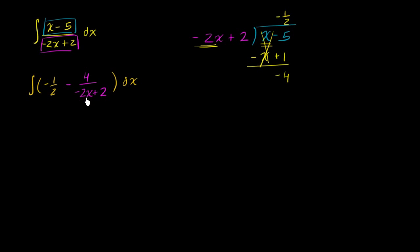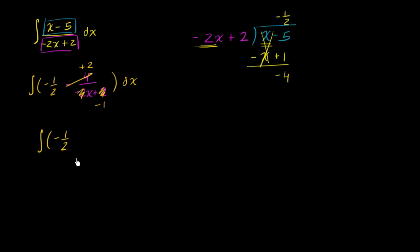Now let's see — it looks like we can simplify this expression a little bit more. The numerator and the denominator are both divisible by two, and we have all these negatives, which always unnecessarily complicates things. So let's actually divide the numerator and the denominator by negative two. Negative four divided by negative two becomes positive two; negative two x divided by negative two becomes x; and two divided by negative two is minus one. So our original integral — and this is just algebra using algebraic long division — has simplified to the integral of negative one half plus two over x minus one, dx.